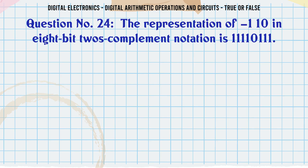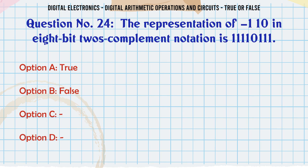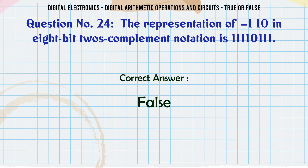The representation of 110 in 8-bit 2's complement notation is 11110111. True or False? The correct answer is False.